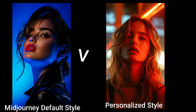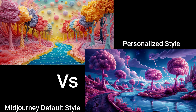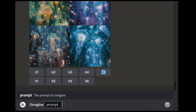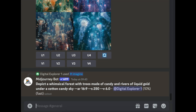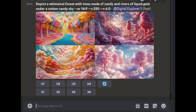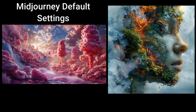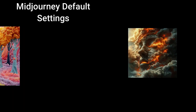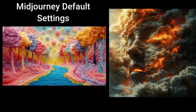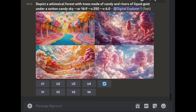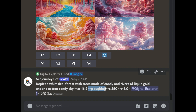Midjourney has released an early version of their model personalization — AI image generation is becoming more personal to your own style. Up until now, every prompt was subject to Midjourney's default settings, heavily influenced by their algorithm, which filled in the unspoken parts of your prompt with combinations of community preferences and biases.